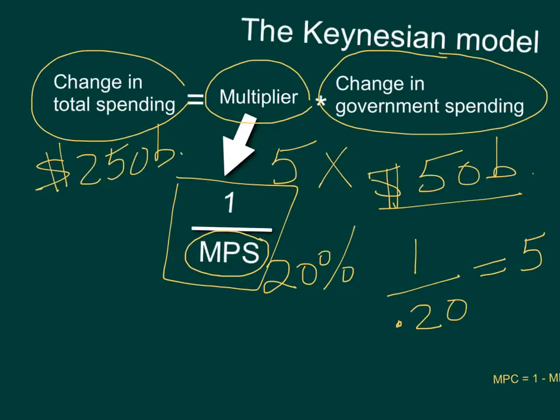So if you get a multiple choice question that says the government increases spending by $50 billion and the MPS is 0.2, you know that the multiplier is 5, and then you can find the change in total spending on the whole economy: 50 times 5. Now some problems will not tell you the MPS, but they will tell you the MPC.